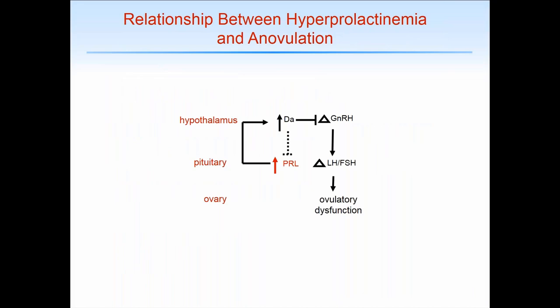How does hyperprolactinemia lead to anovulation? One generally accepted mechanism is that an elevation in prolactin leads to a reflex increase in hypothalamic dopamine. There are dopamine receptors on GnRH neurons and other CNS neurons that impact GnRH neuronal function. A change in GnRH pulsatility leads to a change in LH and FSH secretion, which secondarily leads to ovulatory dysfunction. There are also prolactin receptors in the human ovary, and in rodent species prolactin directly leads to luteolysis, though relevance in humans is not fully understood.